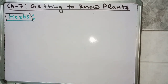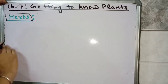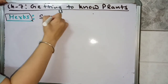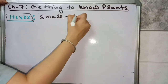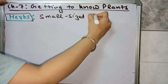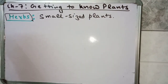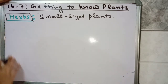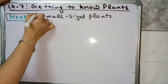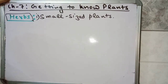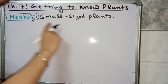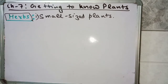Hello students, our today's topic of discussion is herbs. So what are herbs? Herbs are small sized plants. If you see a plant at your home, in the playground or in your school, and that plant appears smaller than you, then that plant might be a herb. So the first characteristic of a herb plant is that it is a small sized plant.